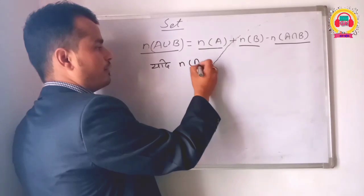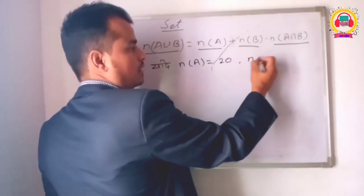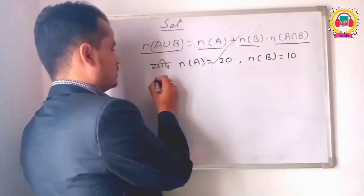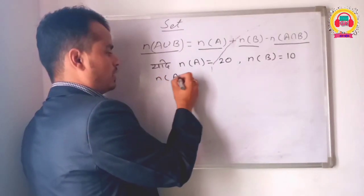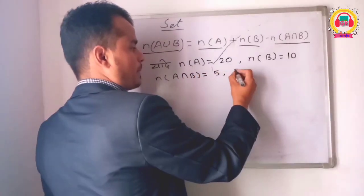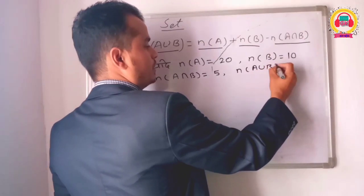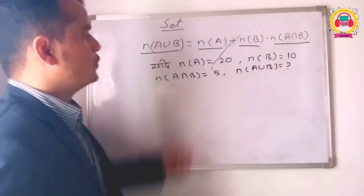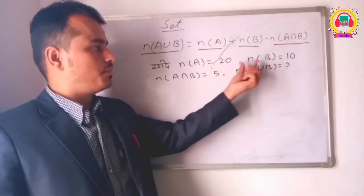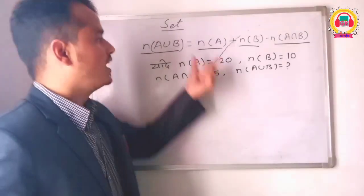Number of A is equal to 20. Number of B is equal to 10. Number of A intersection B is equal to 5. Number of A union B is equal to what? If n(A) = 20, n(B) = 10, n(A intersection B) = 5, find A union B.